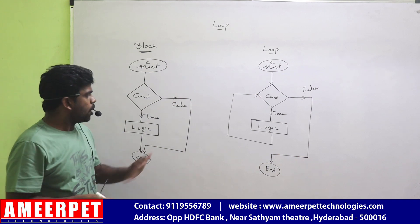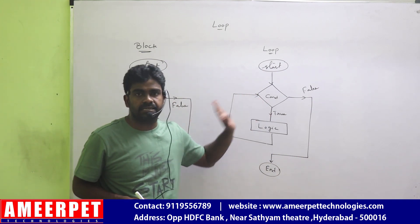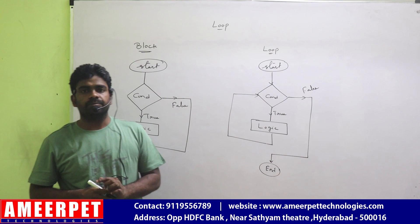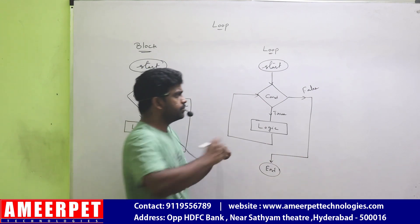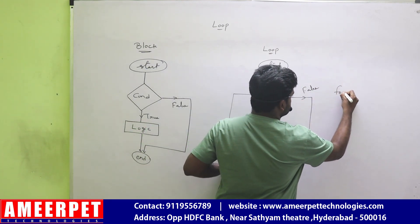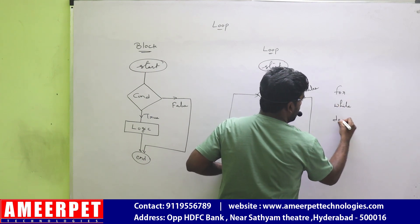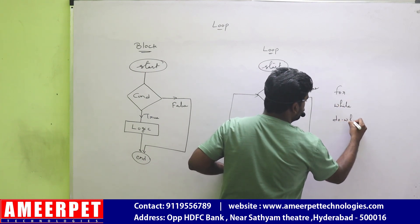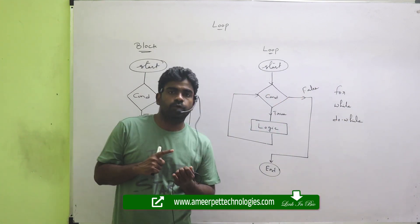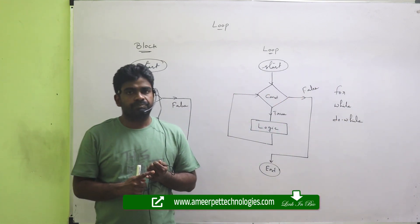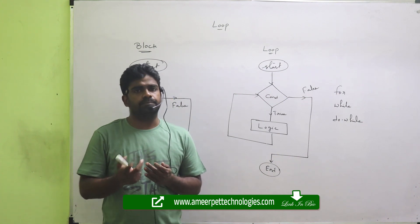This is how the block gets executed and this is how the loop gets executed. Now the question is: how many types of loops are there? Generally, in all programming languages, there are three types of loops: for, while, and do-while.